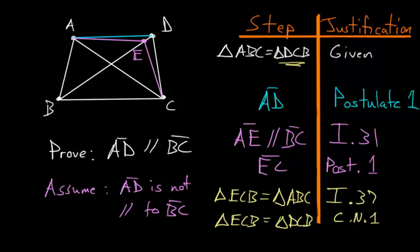And here's where we get our contradiction. Because notice ECB is just a part of the triangle DCB. And we know due to common notion number five, that the whole is always greater than the part. So these two can't be equal.